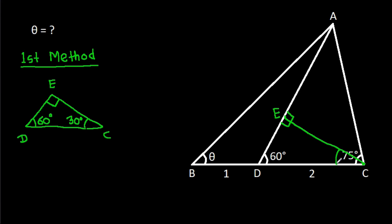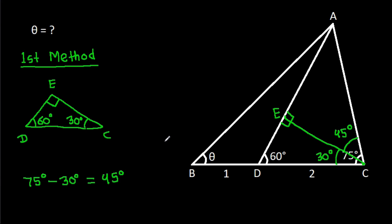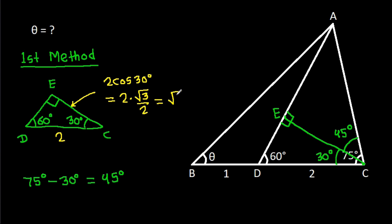This angle will be 30 degrees, so this angle will be 75 minus 30 degrees, that will be 45 degrees. Also, we have CD is 2, so CE will be 2 cos 30 degrees, that will be 2 times root 3 over 2, that will be root 3.